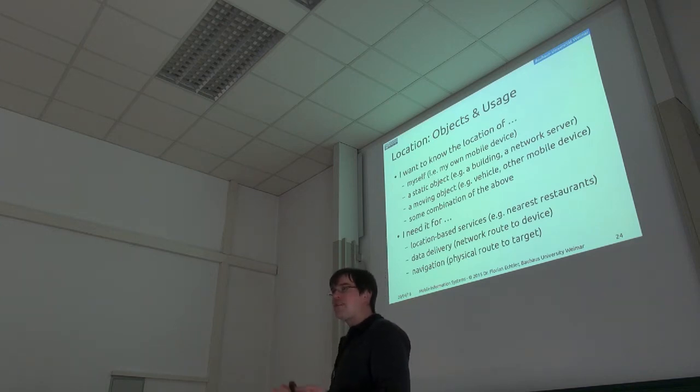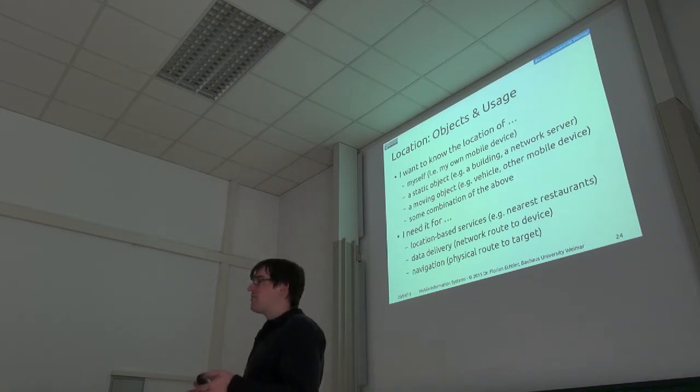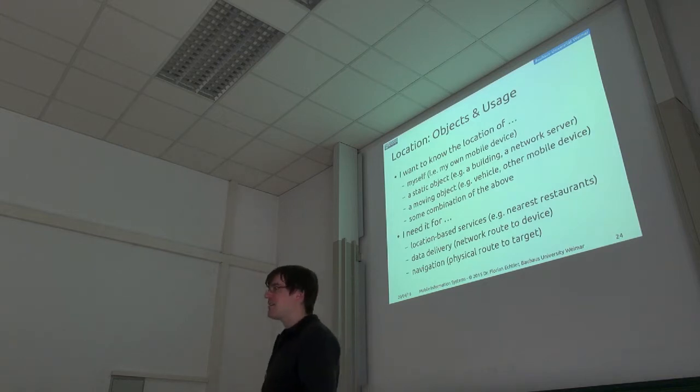So these are also quite different but related aspects of what location can actually mean. It's not always physical location in terms of some coordinates, but it can also mean simply location in terms of the network. So where do I have to actually send my data that it comes out at the right recipient?